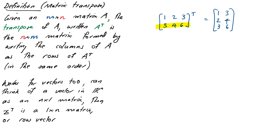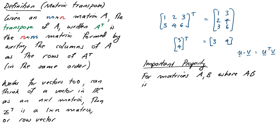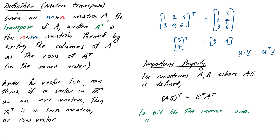This works for vectors too: if we take the vector (3,4) and transpose it, we get the row vector (3,4). We can also use this notation for the dot product - u dot v can be written as u^T times v, treating it as matrix multiplication. One important property: for matrices A and B where the product AB is defined, the transpose of AB equals B^T times A^T. So the transpose reverses order, much like the inverse.